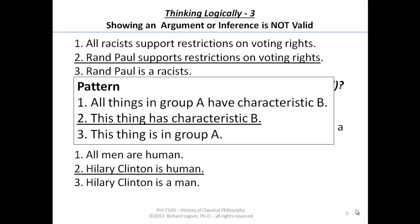If you look at it, premise one in the first argument says all racists do something — support restrictions on voting rights. Premise one of the second argument says all men have a certain characteristic — are human. So notice the pattern of both of these arguments, at least the first premise: all things in group A have some characteristic, let's call it B.